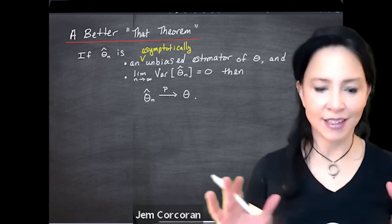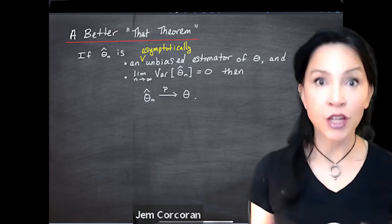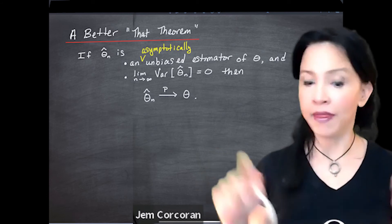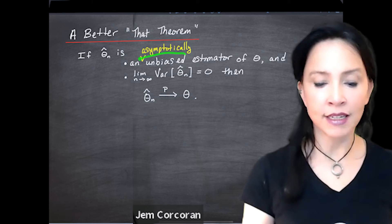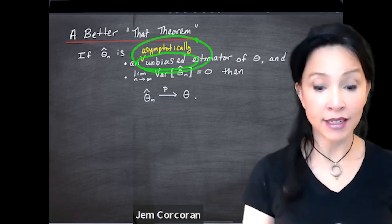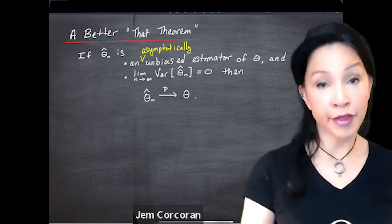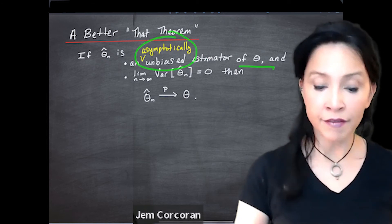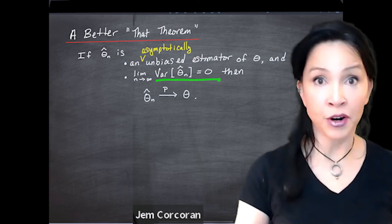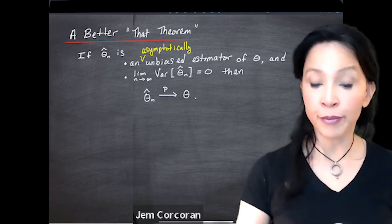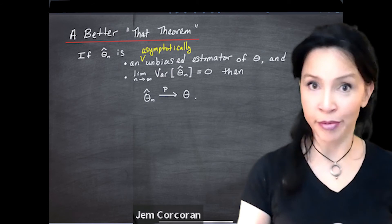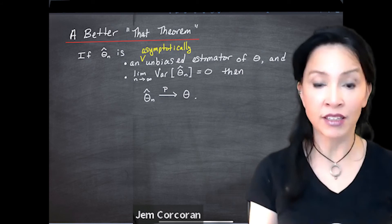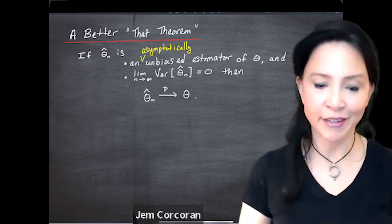The limit, assuming we have an unbiased estimator, as n goes to infinity of the expected value of theta n hat, is the limit as n goes to infinity of theta. And theta is not going anywhere, so this is still theta. Any unbiased estimator can also be considered a really boring asymptotically unbiased estimator. Before we prove this, let's make sure we're all on the same page. What we want to prove is this better version of that theorem: we're going to replace unbiasedness with asymptotically unbiased. If an estimator theta n hat is asymptotically unbiased for theta, and the variance of the estimator goes to zero as n goes to infinity, that is going to be enough to give us convergence in probability. We can't use Chebyshev's inequality to show this, so we're going to have to take a different approach.